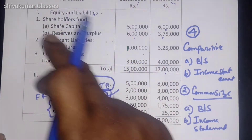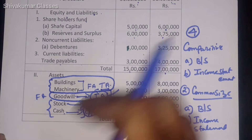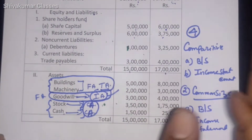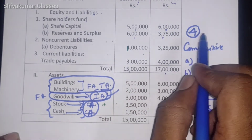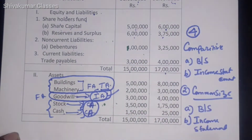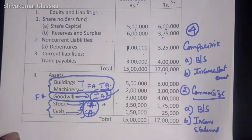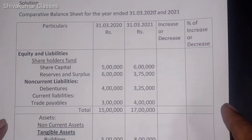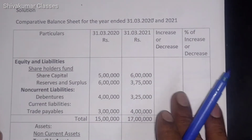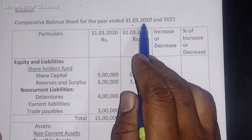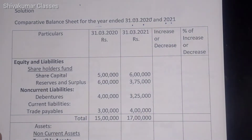Based on this problem, we need to work out the answer. What is Comparative? Just compare it — comparing one year's information with another year's information. Now, Solution: Comparative Balance Sheet for the year ended 31st March 2020 and 2021.